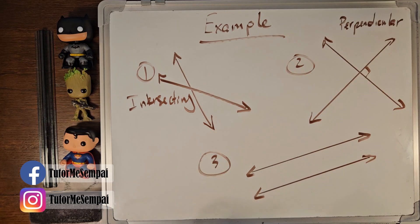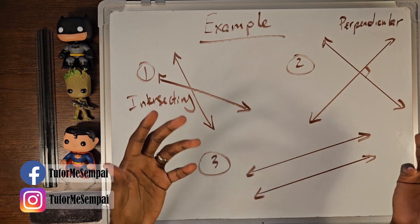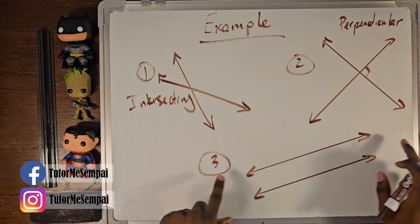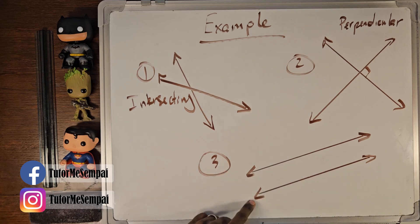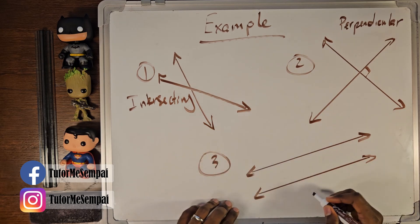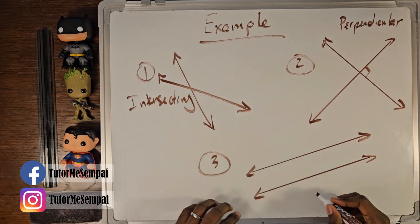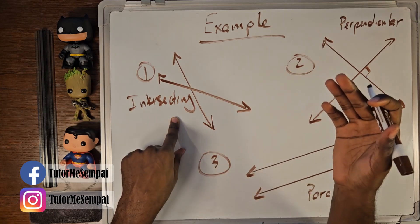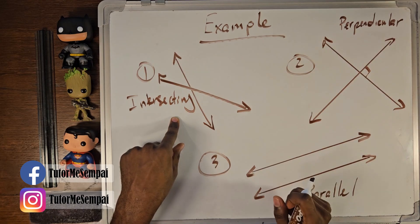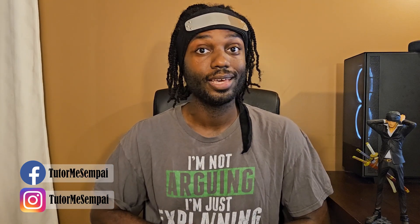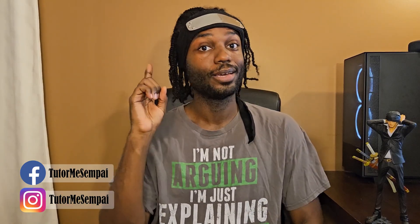Now our third pair: are they touching? Will they ever touch? If drawn perfectly, they will indeed never touch — they go side by side forever. That means they are not intersecting, and because they're not intersecting they cannot be perpendicular, so they have to be parallel. To summarize: if lines touch or will touch, you have intersecting. If they touch and form a 90 degree angle, you have perpendicular. If they never touch, you have parallel.